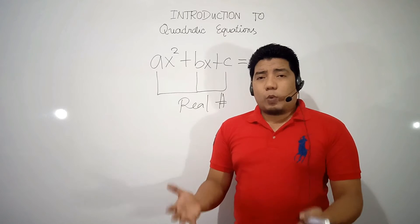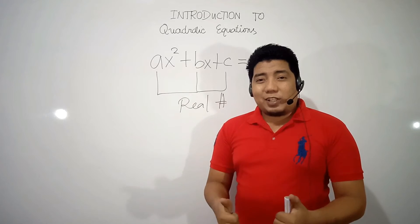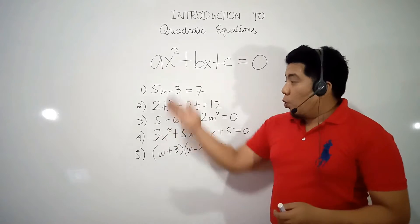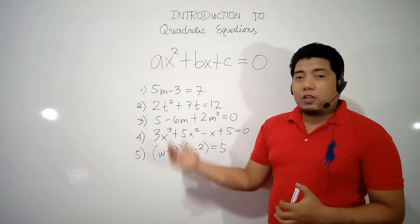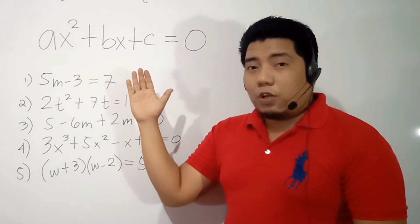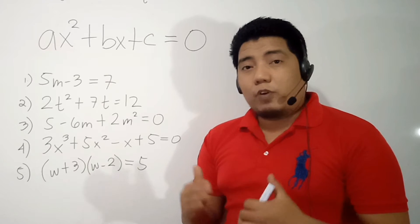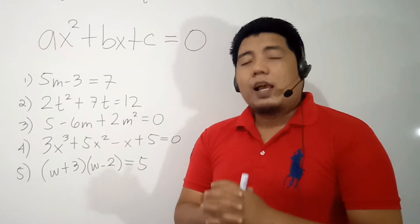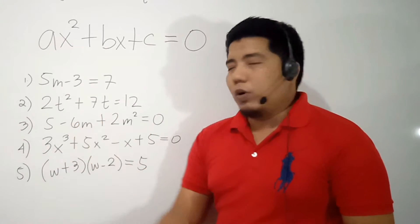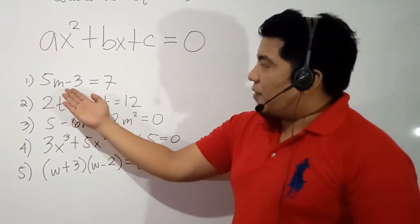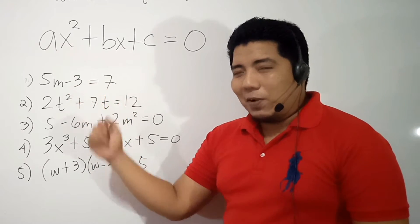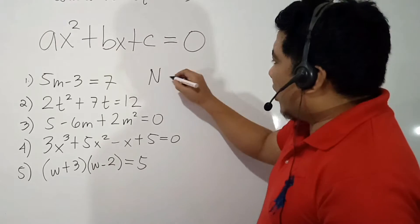How do we know if a given equation is a quadratic equation? Let's consider some examples. Remember, the quadratic equation is an equation in the second degree, so the highest exponent must be 2. Consider Number 1: 5m minus 3 is equal to 7. Do you see this in the second degree? No. Therefore, this is not a quadratic equation.